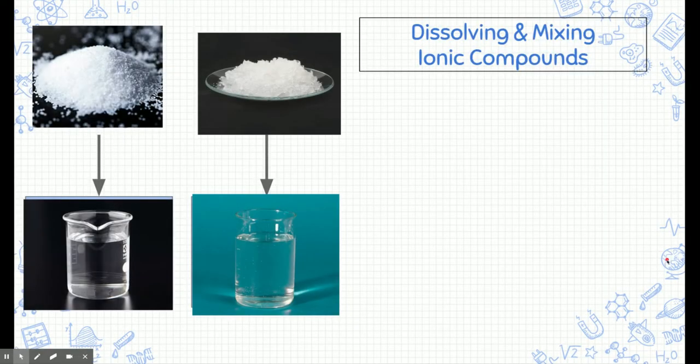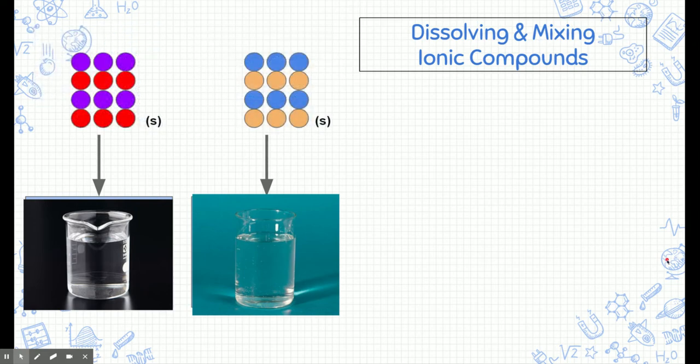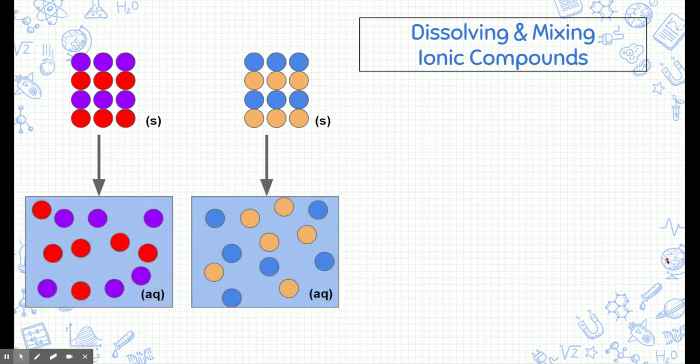We're going to focus mostly on ionic compounds dissolved in water. Here are two examples: two white ionic compounds — two different salts. At the molecular level, they're solid particles close together, made of cations and anions stuck together. Now if we take those salts and dissolve them in beakers of water, those salts are going to break apart into their individual cations and anions floating around. These are electrolyte solutions, and we change the state symbol to aqueous, or AQ.